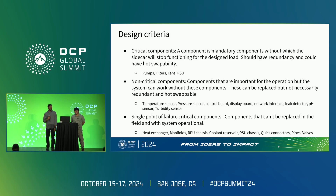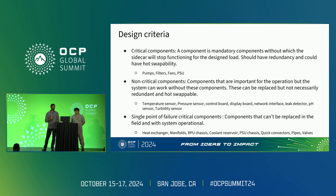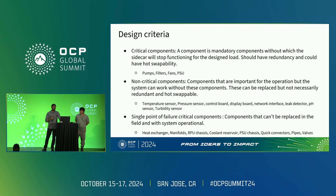Single point of failure components include the heat exchanger itself, manifolds, tubes, and valves. Without these, you would not be able to operate the sidecar at all — this would represent a complete failure of that particular sidecar. We are defining this criteria as a guideline so all vendors can unify on sidecar component design.